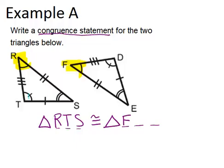Next, I had T in my RTS. That means my next letter in the other triangle has to be D, because that matches up with T. And finally, we will end with E, because that's the letter that's left.